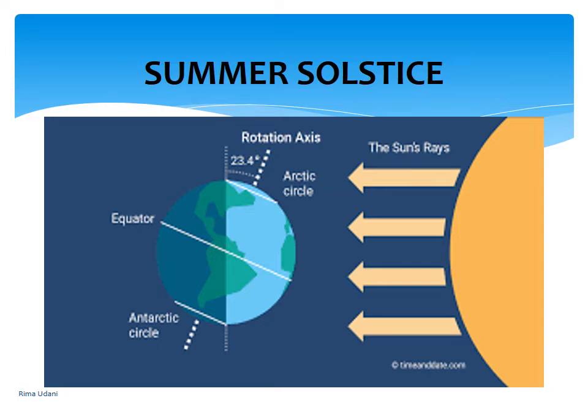On the 21st of June, the northern hemisphere is tilted towards the sun, and the rays of the sun fall directly on the Tropic of Cancer. As a result, these areas receive more heat, while areas near the poles receive less heat as the rays are slanting. The north pole is inclined towards the sun, and places beyond the Arctic Circle experience continuous light for about six months. It is summer in the regions north of the equator, with the longest day and shortest night occurring on June 21st. At this time, in the southern hemisphere, all these conditions are reversed — it is winter there.